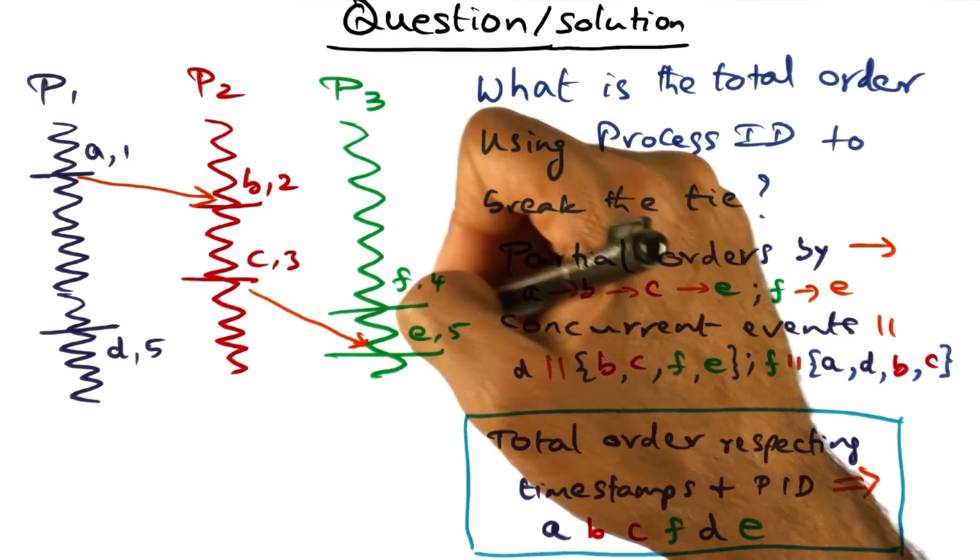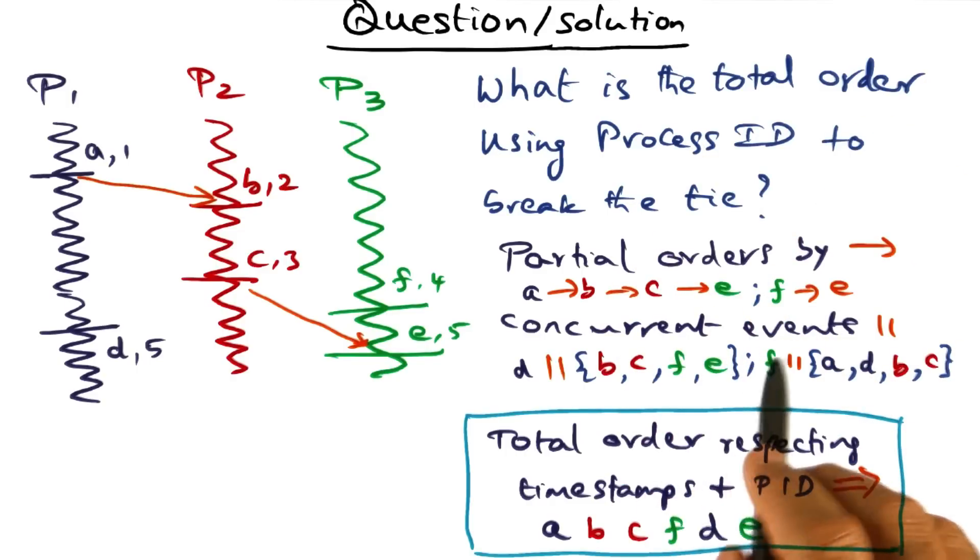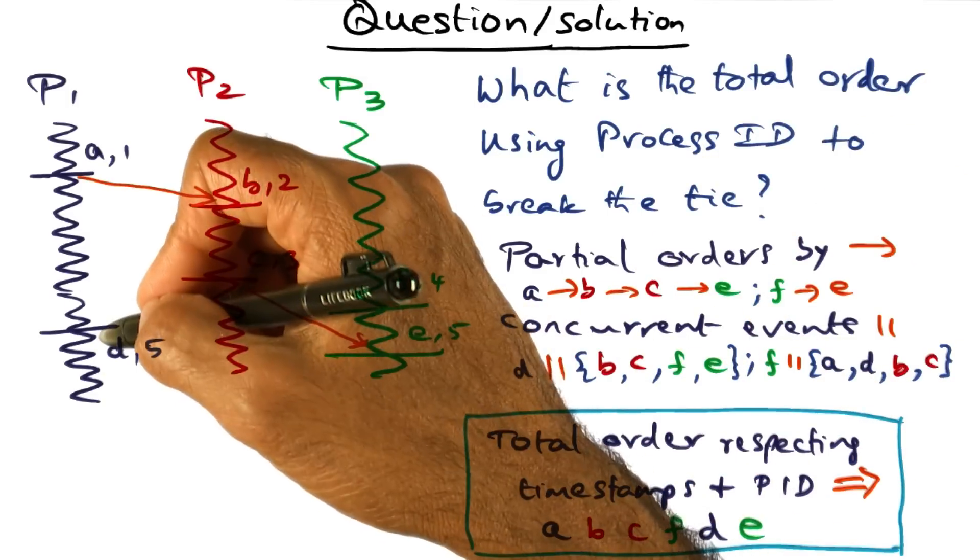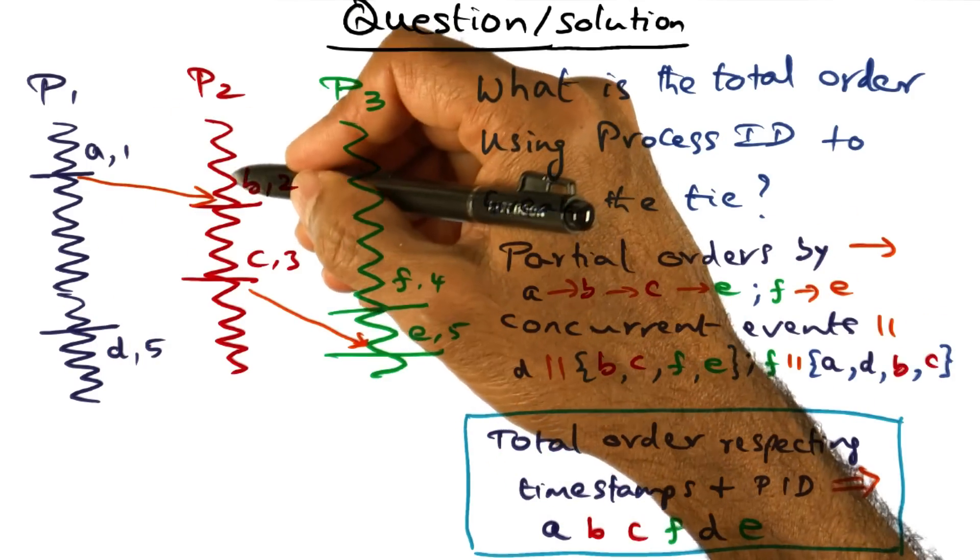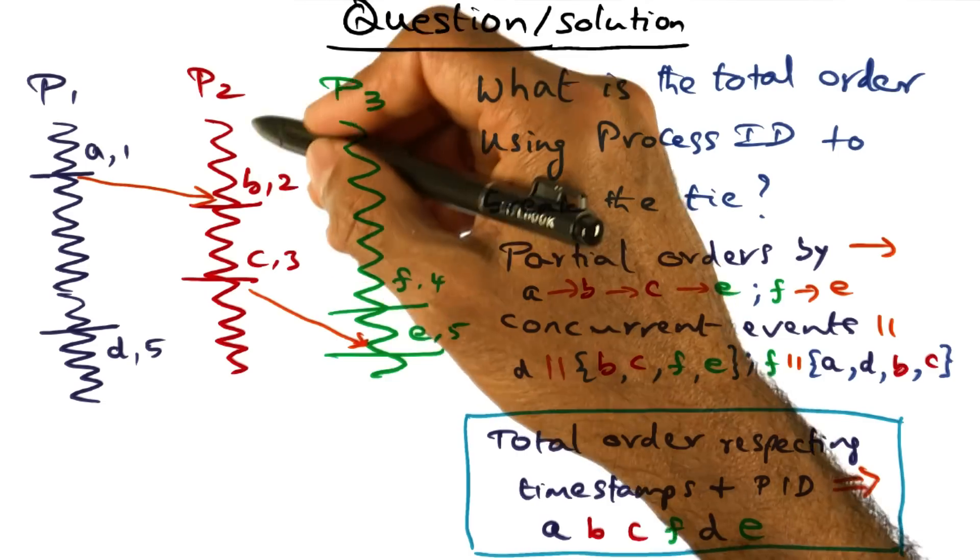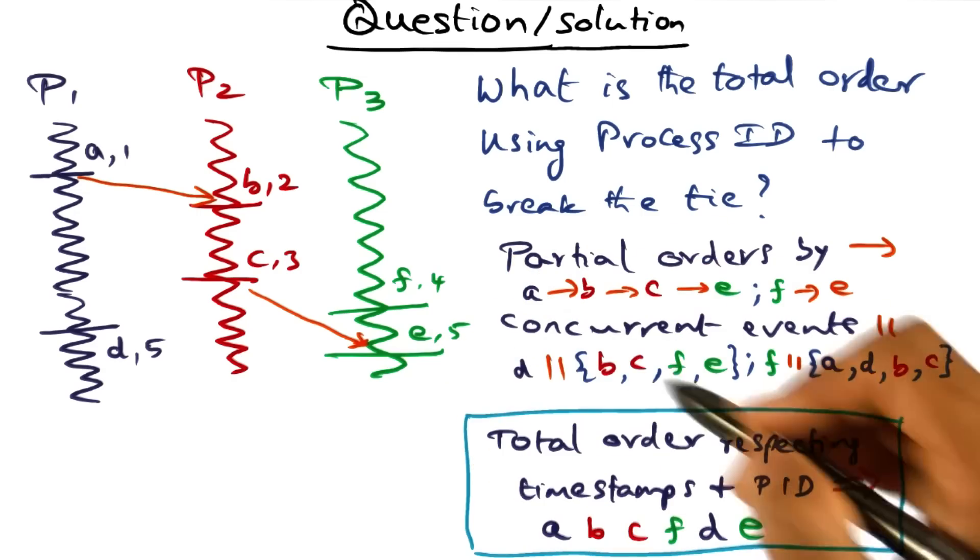A1, B2, C3, E5. We can order them totally. Now let's look at the concurrent events that are happening. The concurrent events that are happening is D over here is concurrent with all the other events in the other processes. D is concurrent with B and C, it is concurrent with F and E.